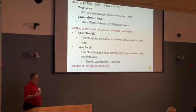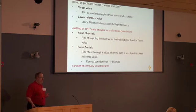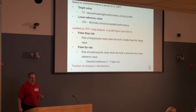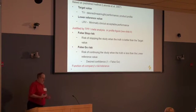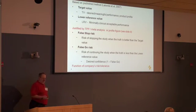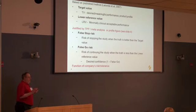Two other things. We also need to understand what the company's tolerance for risk is, expressed in two quantities very similar to type 1 and type 2 error. We have a false stop risk — the risk of stopping the study when the truth is better than the target value, also known as the acceptable risk associated with the target value. And then we have a false go risk — the risk of continuing the study when the truth is less than the lower reference value. We also use something called the desired confidence: one minus this value is the desired confidence that you're better than the lower reference value in truth, given that you have seen a particular treatment effect. Those two values quantify the tolerance for risk that a company has.